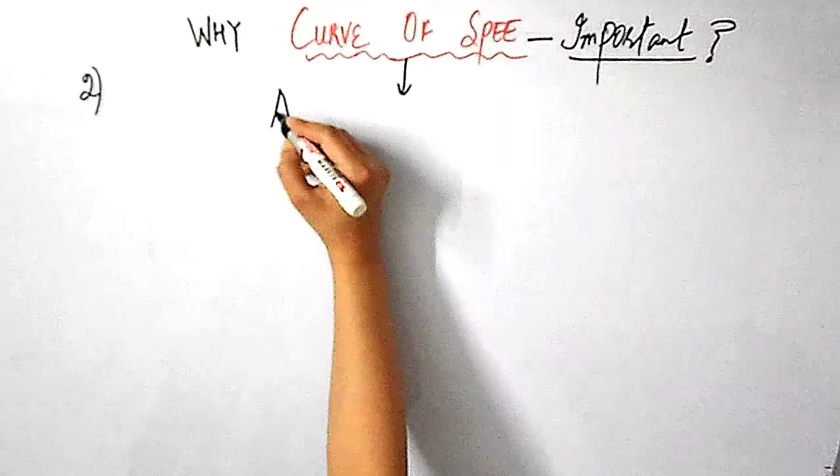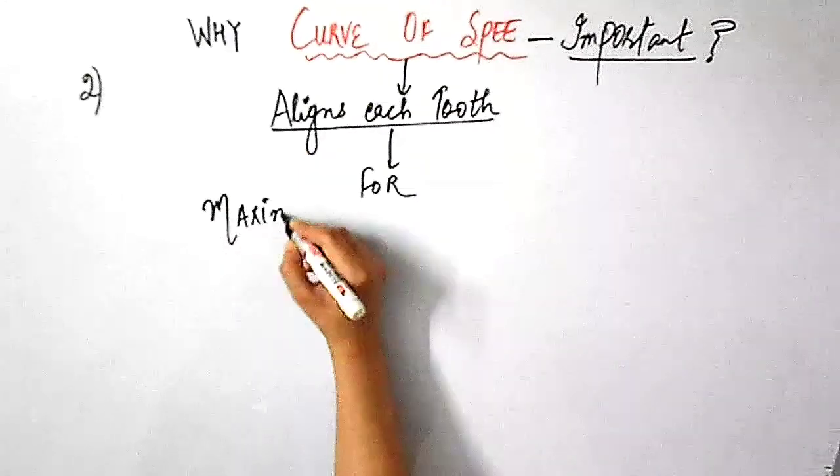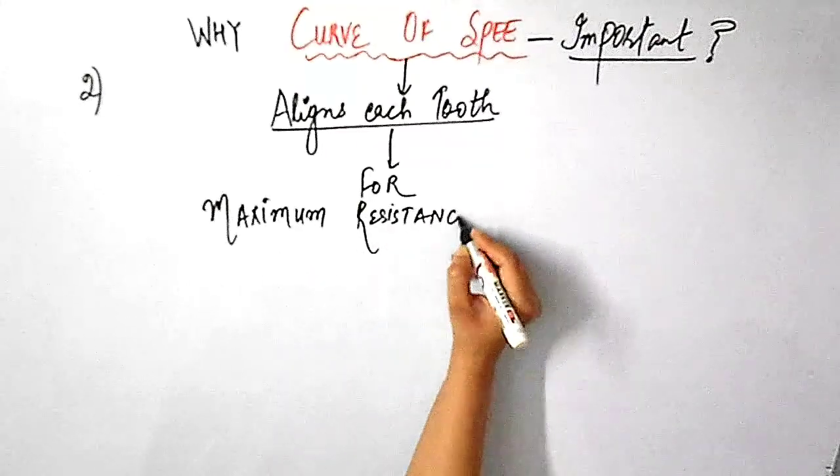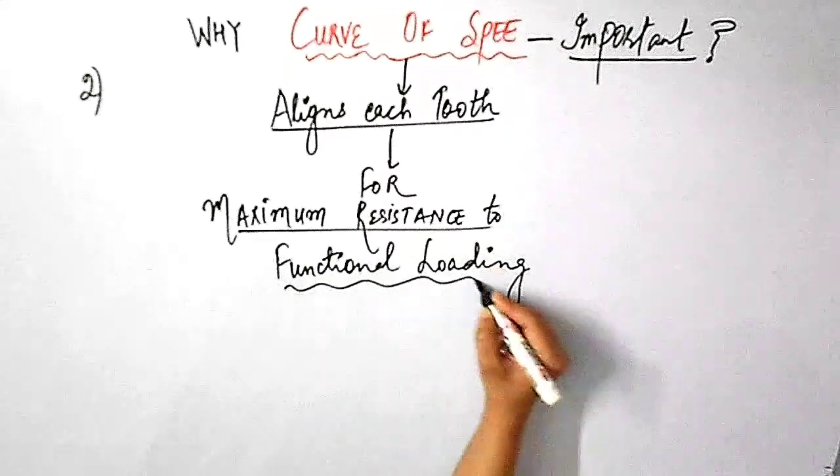Hence, this explains the second reason for the curve of Spee being so important that the curve of Spee aligns each tooth for maximum resistance to functional loading.